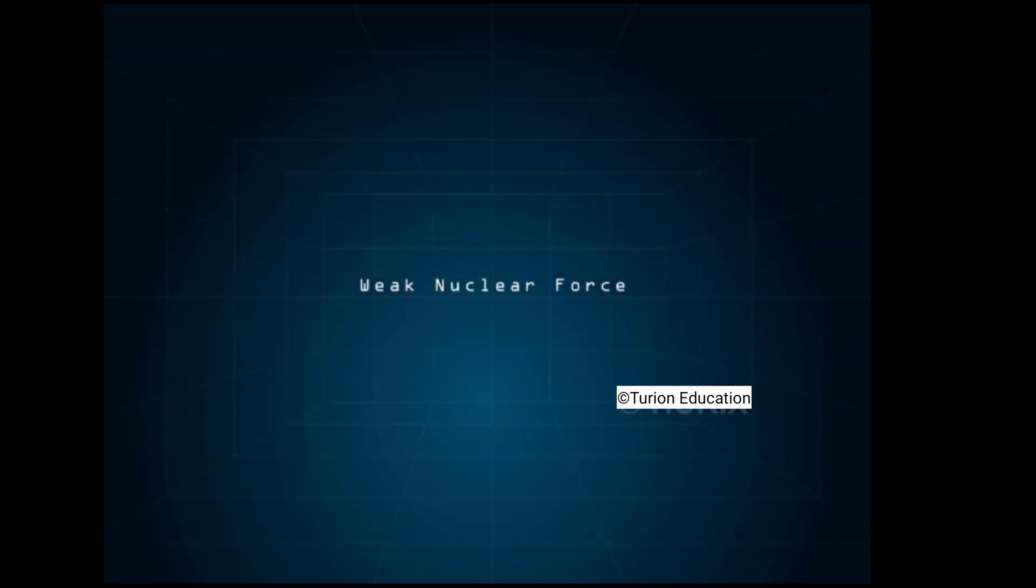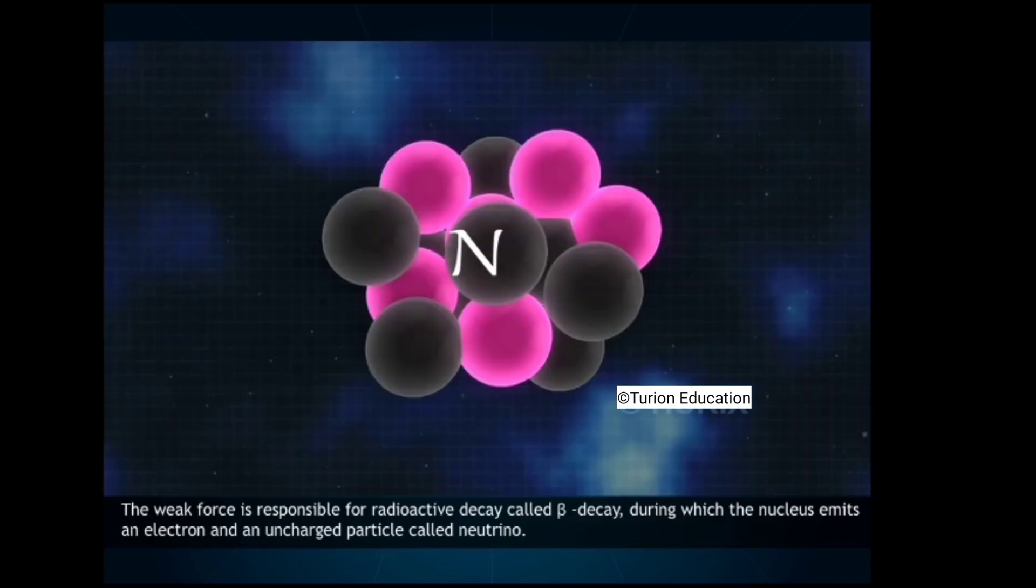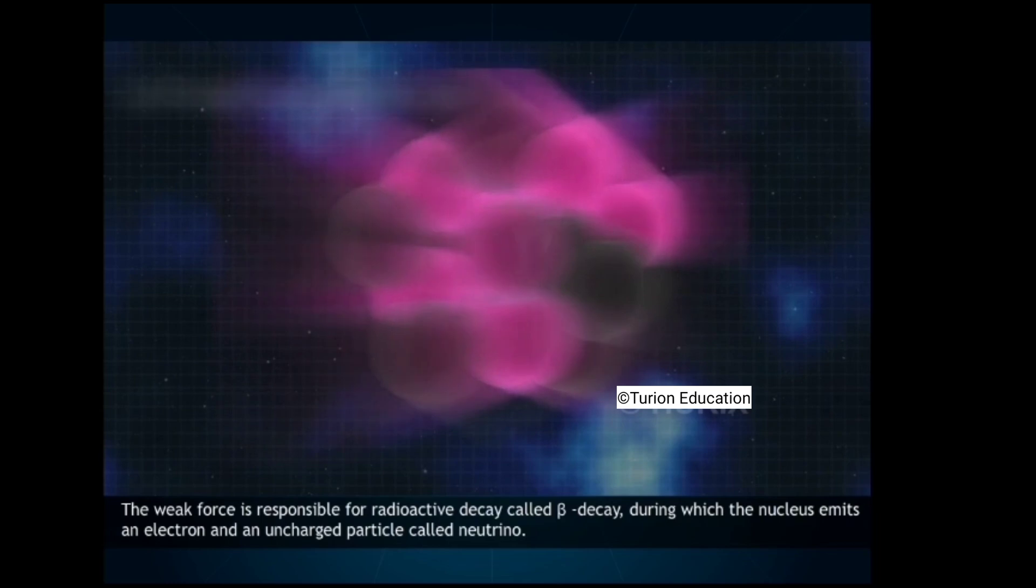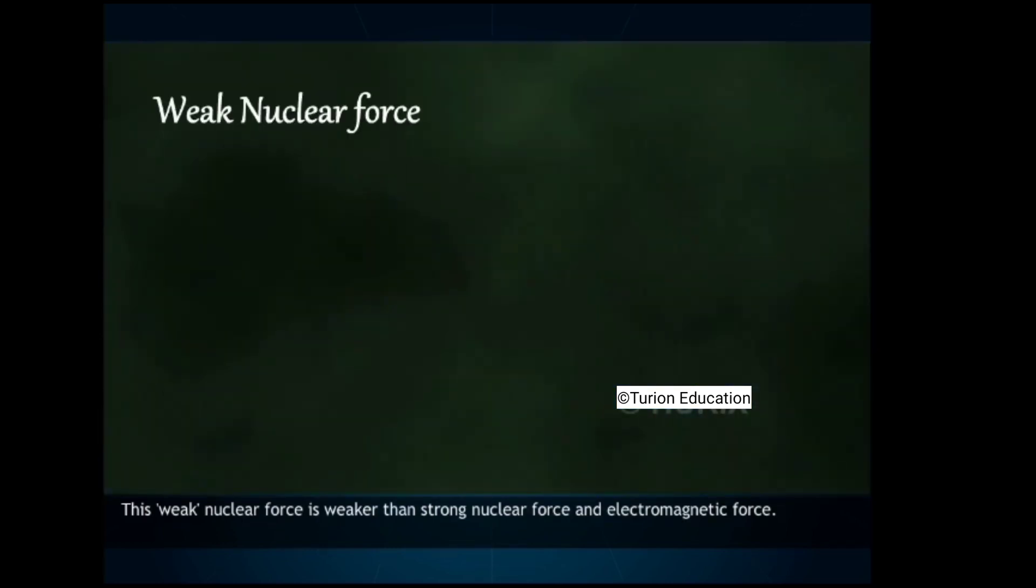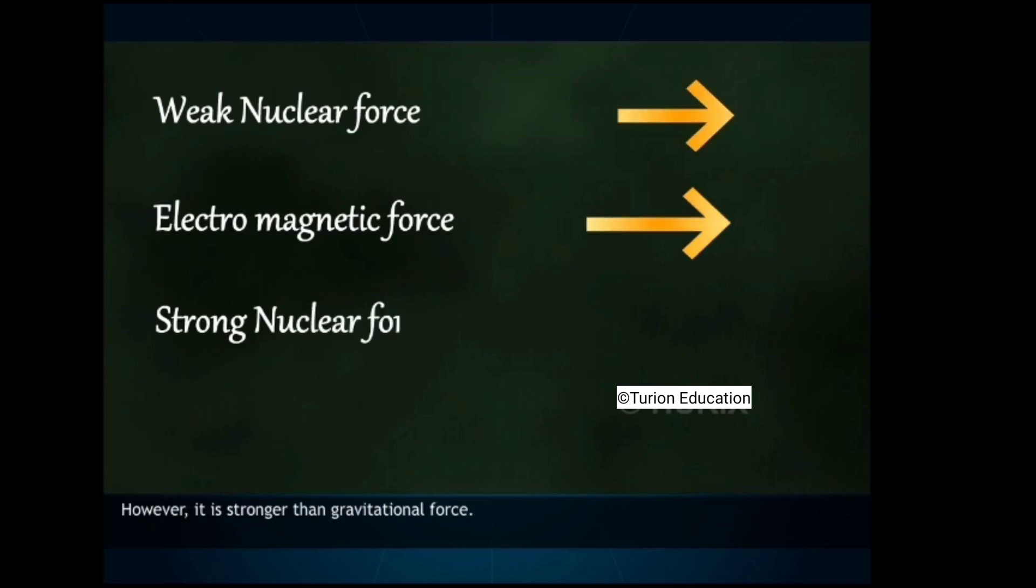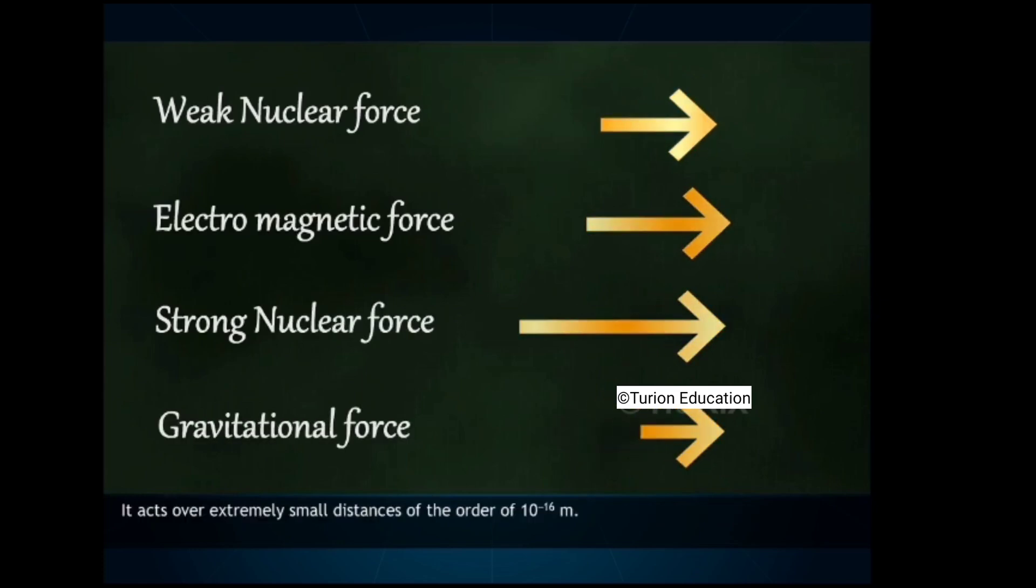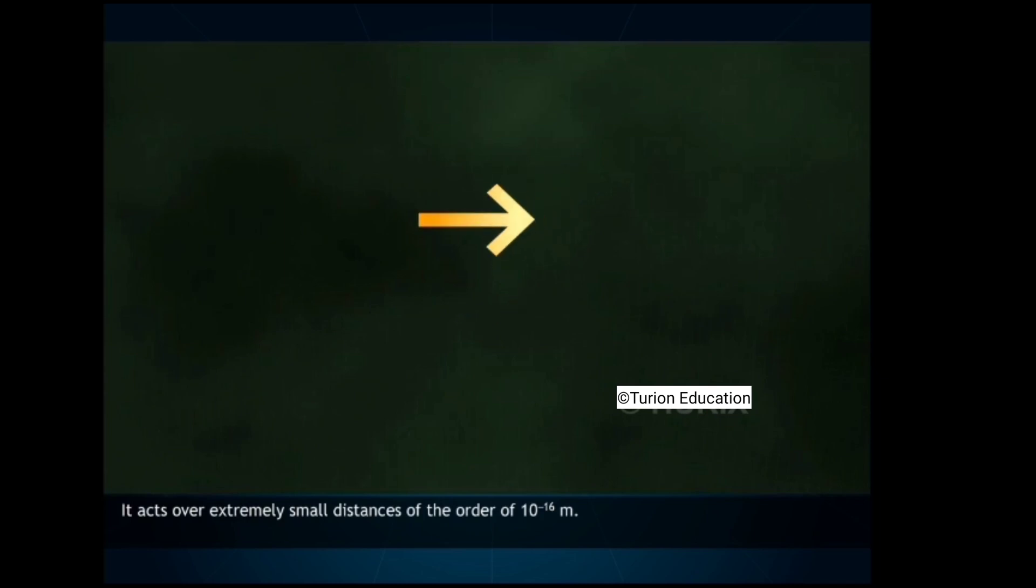Weak nuclear force. The weak force is responsible for radioactive decay called beta decay during which the nucleus emits an electron and an uncharged particle called neutrino. This weak nuclear force is weaker than strong nuclear force and electromagnetic force. However, it is stronger than gravitational force. It acts over extremely small distances of the order of 10 raised to minus 16 meters.